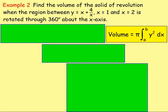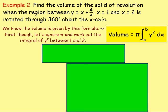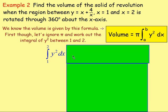Example 2: Find the volume of the solid of revolution when the region between y equals x plus 4 over x, x equals 1 and x equals 2 is rotated through 360 degrees about the x-axis. So once again we are thinking, we've got the formula. We've got the y equals x plus 4 over x. We know what y is equal to. And in order to work out the volume, well, it's going to be pi times the integral of y squared. So once again I'm going to ignore pi just now, and I'm just going to integrate y squared between x equals 1 and x equals 2.